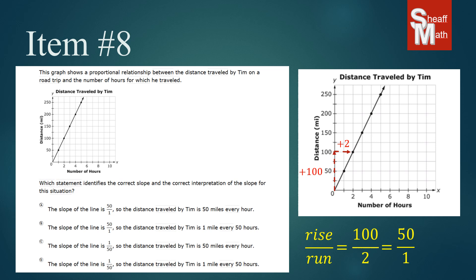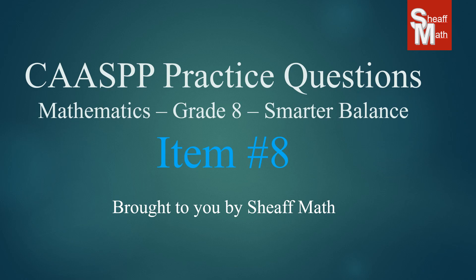So A or B is correct. We have to figure out what it means in real terms: does it mean Tim is traveling 50 miles every hour, or 1 mile every 50 hours? That second option doesn't make any sense — we know he's going 50 miles every hour. So A is your correct answer. I hope that helped, thank you.